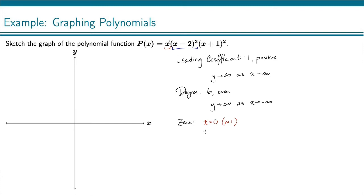And then in this next factor, if I set that equal to 0, I get x equals 2. And that has a multiplicity of 3, because the exponent there is 3.